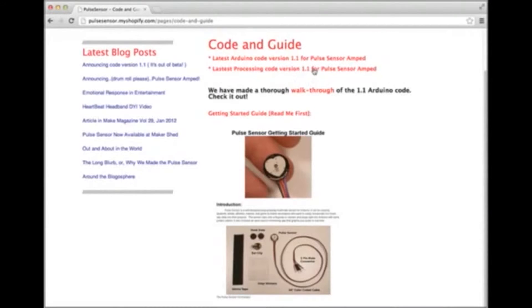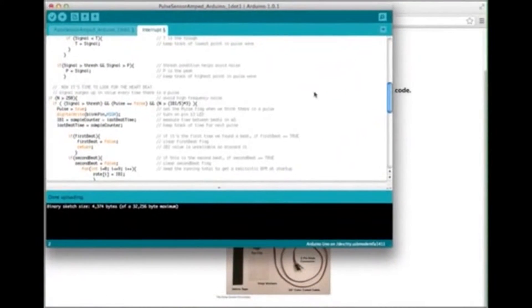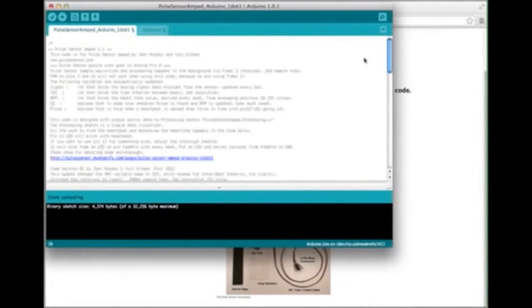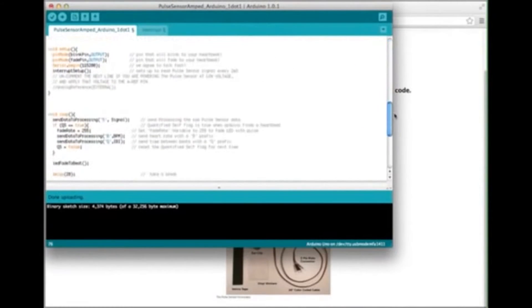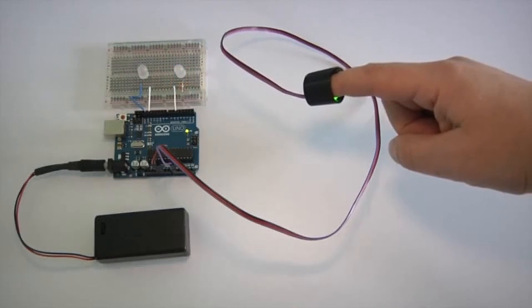Once you download and install the pulse sensor software on the Arduino, the Arduino itself does all the work in finding a user's pulse and calculating the beats per minute.